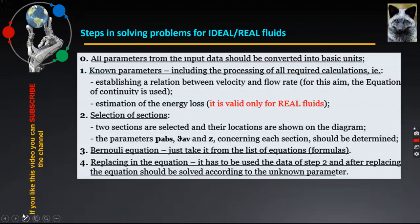As an additional step 0, it is included an action where all parameters from the input data should be converted into their basic measuring units. Step 1 covers the so-called known parameters, including the processing of all required calculations instead of using Bernoulli's equation, which is establishing a relationship between velocity and flow rate. For this aim, the equation of continuity is used.